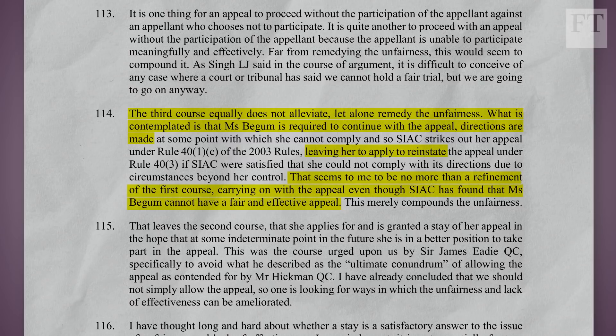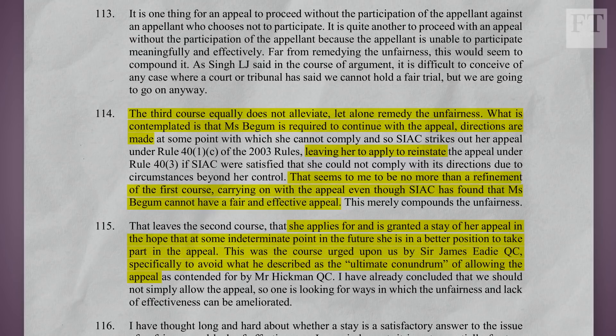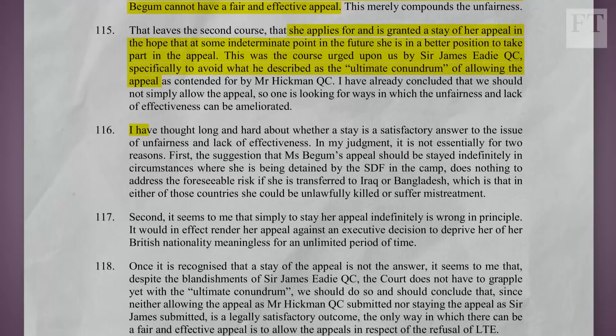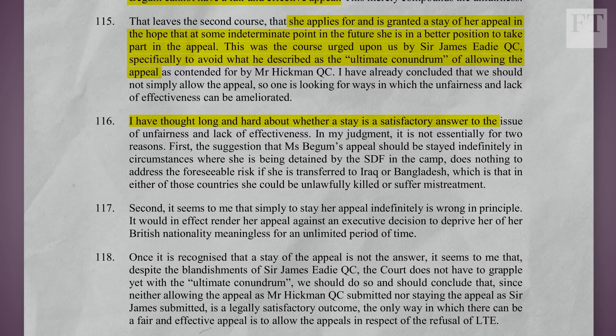That left only the second course. The second course is that she applies for and is granted a stay of appeal, in the hope that at some indeterminate point in the future she would be in a better position to take part. Note what follows: this was the course urged upon the Court by the government, specifically to avoid what was described as the 'ultimate conundrum' of allowing the appeal of the decision not to let her back into the country. But the Court of Appeal had already concluded it would be unfair just to grant her appeal — so even the second course of action put forward by SIAC was found unsatisfactory.